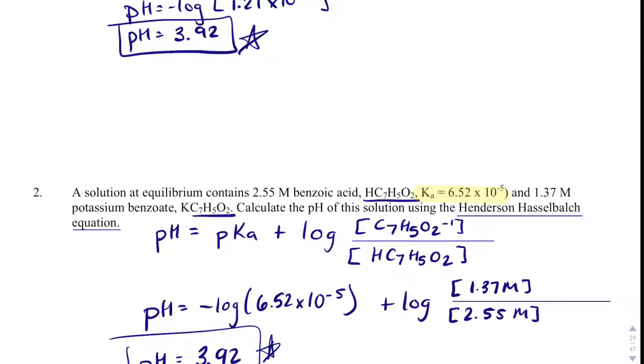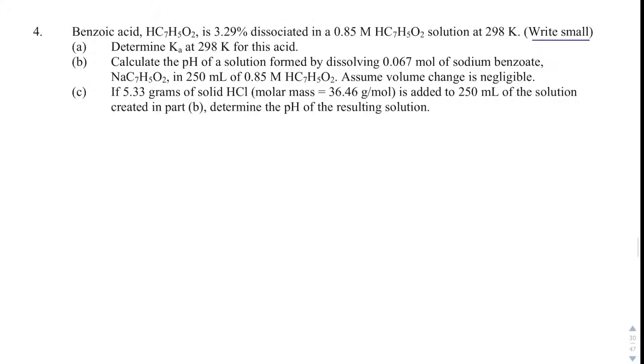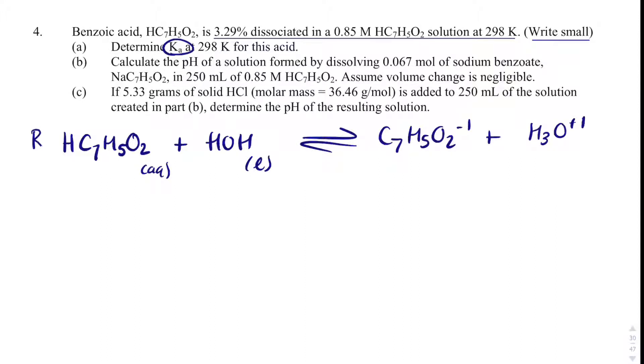So what we're going to do is another example with benzoic acid. That's going to be number 4, and I've made a note, write small, because this one has 3 parts. In part A, we're given that the dissociation of benzoic acid is 3.29%, and we need to determine Ka. Well, let's write a reaction first. HC7H5O2, plus HOH. That will form C7H5O2 with minus 1 charge, plus hydronium. And I can set up a RICE table. We have 0.85 molar for benzoic acid. Of course, water is just an X. Benzoate, they don't give us anything on that, or hydronium, so this will be minus X, plus X, and plus X.